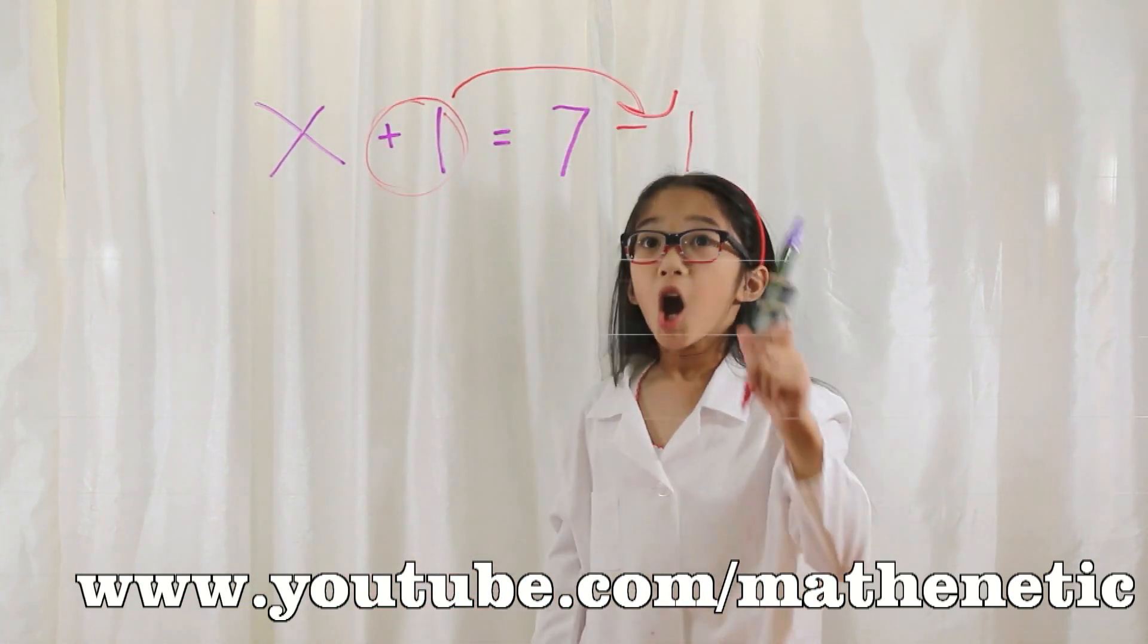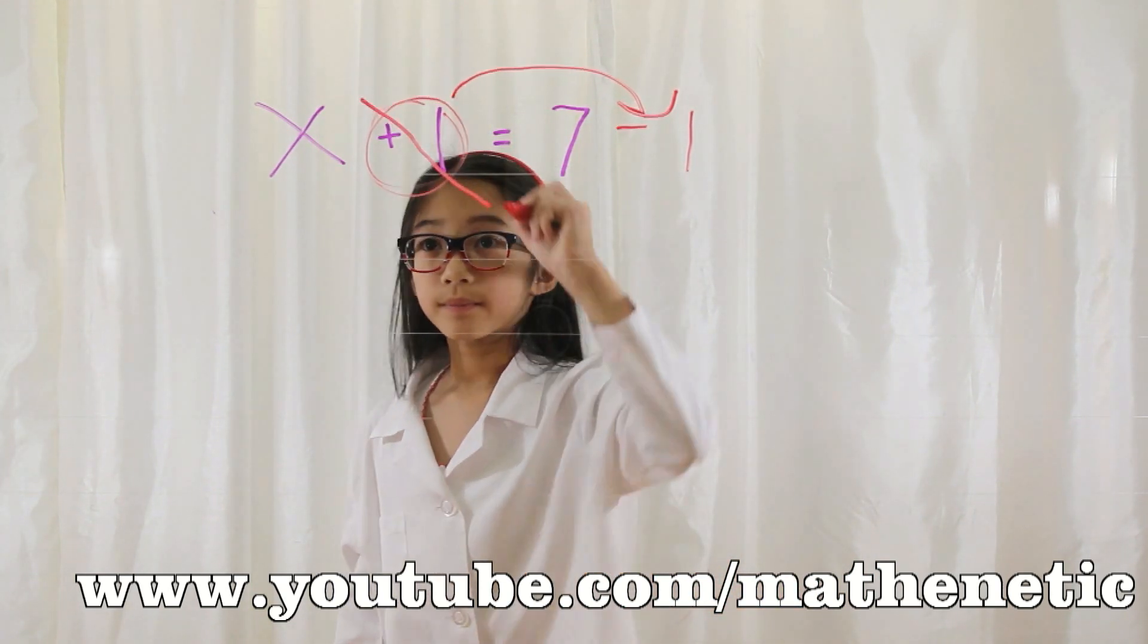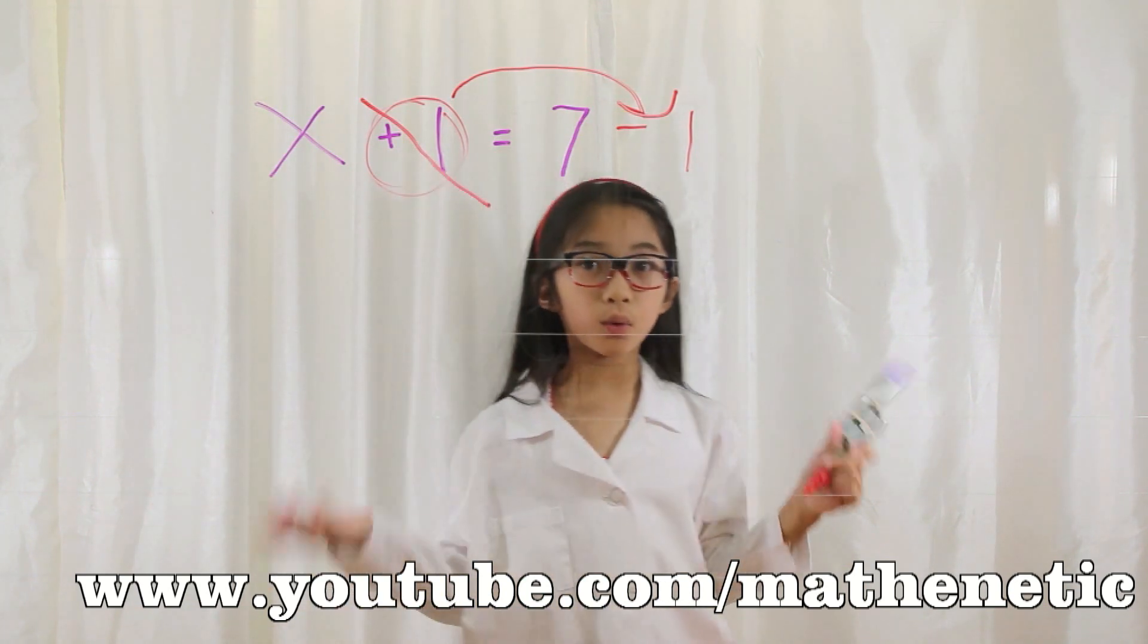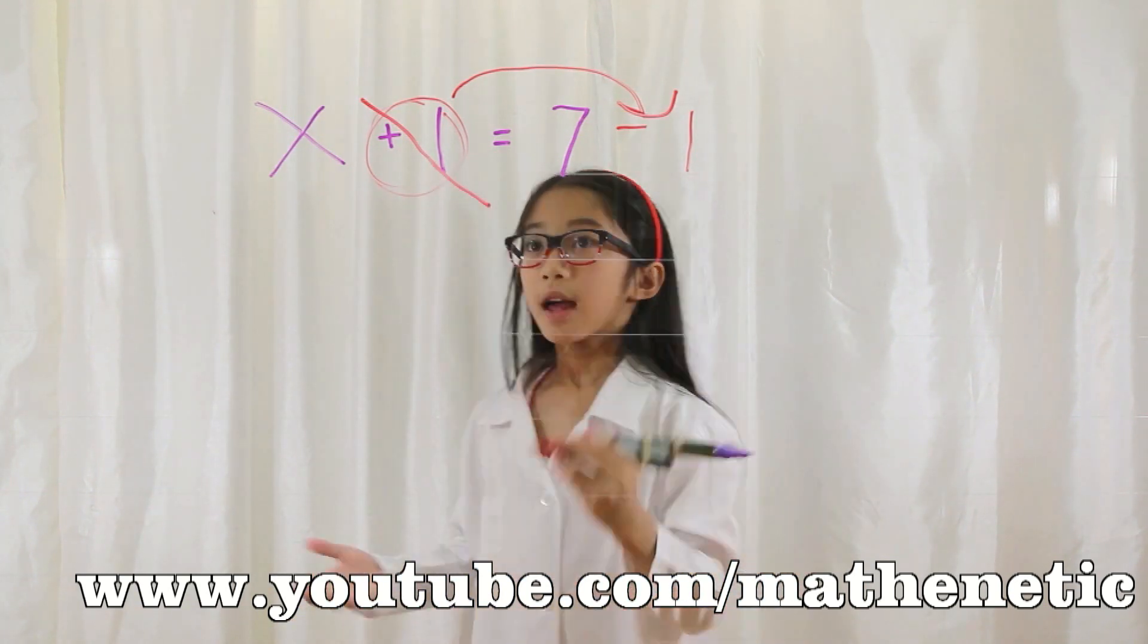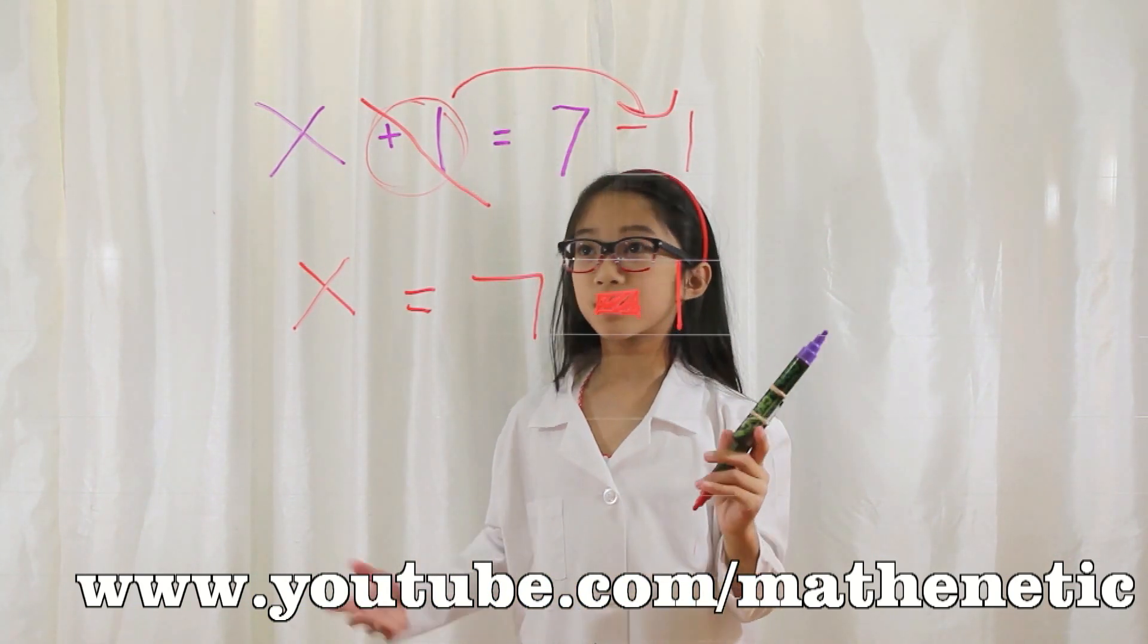It will become a minus 1. So that will cancel out there. So the equation becomes x equals 7 minus 1.